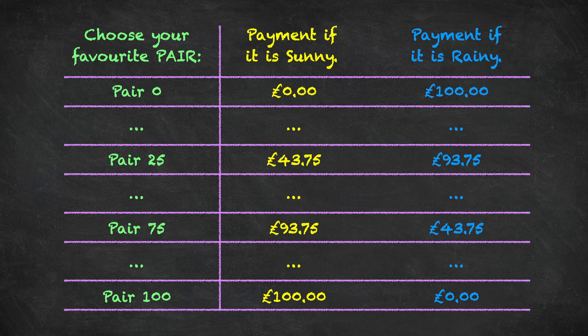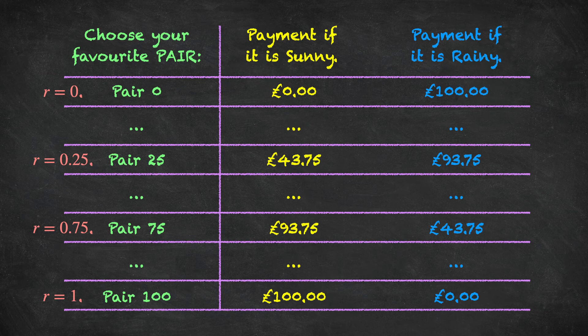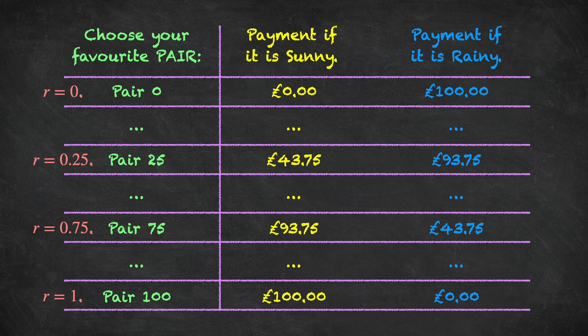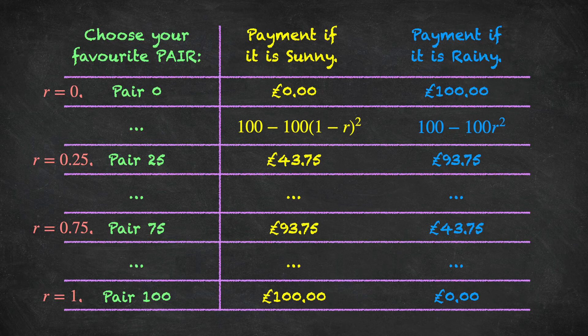So this is essentially the proper scoring rule. Where is R? Well, by choosing pair 0, you are indirectly announcing R equals 0. By choosing pair 25, you're indirectly announcing a number R equals 0.25. So you can take whichever pair that is chosen and divide it by 100, and that is the decision maker's subjective probability for the event it is sunny. So how did we calculate these values? Well, the yellow values, the payment if it is sunny, is just the scoring rule. And I just multiplied the numbers by 100.